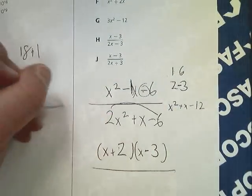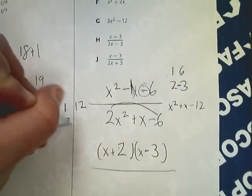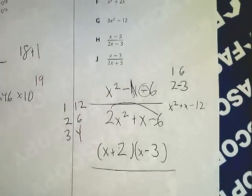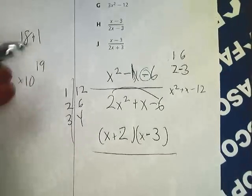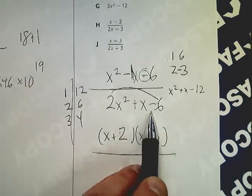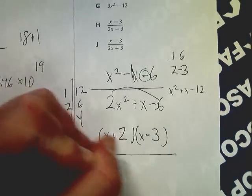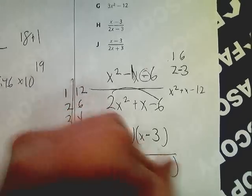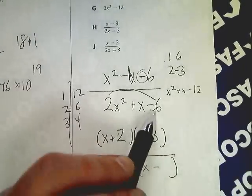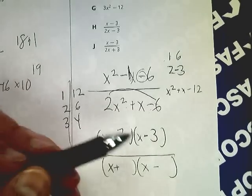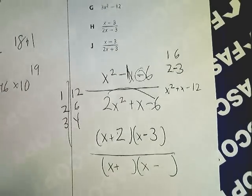Then I do a factor list for 12. I've got 1 and 12, 2 and 6 and 3 and 4. This sign says that the answer is going to be different. So I'm going to be subtracting the factors. If this was a plus, they'd both be the same. And this sign would tell me what they were.